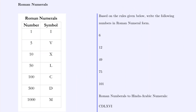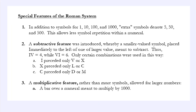Our next historical number system is Roman numerals. With Roman numerals we've got these symbols — again, the symbols will be given on any exam, so you just need to know how to work with them. The Roman numeral system has symbols for 1, 10, 100, and 1000, and also has extra symbols for 5, 50, and 500. This allows less symbol repetition within a numeral. For instance, to write 15, instead of writing ten ones and five ones, you write the symbol for 10 and then the symbol for 5.